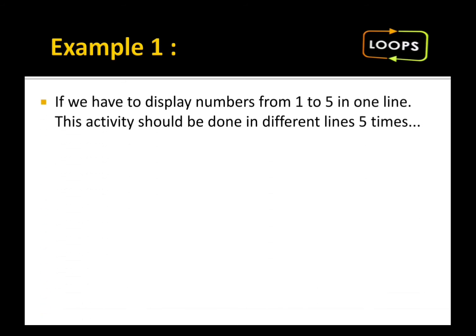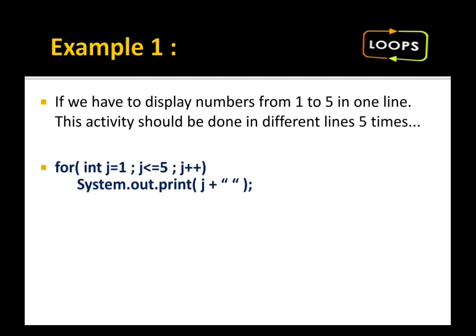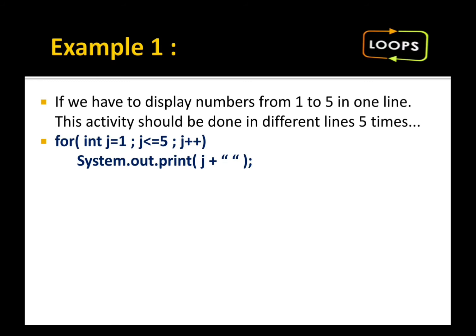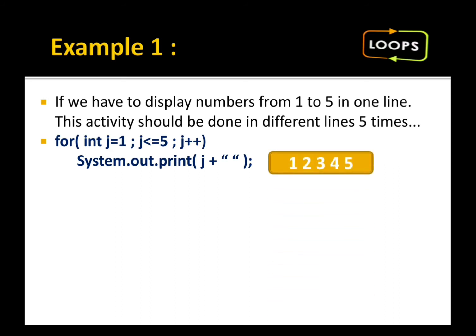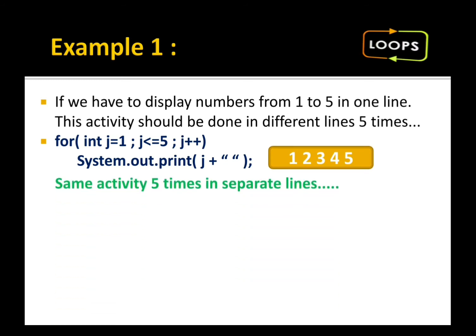If we have to display numbers from one to five in one line, and we have to do this activity in five different lines — the first task is to display one to five in one line. We write: for(j=1; j<=5; j++) and display j with a space, giving us one two three four five. I want to do the same task five times in different lines.